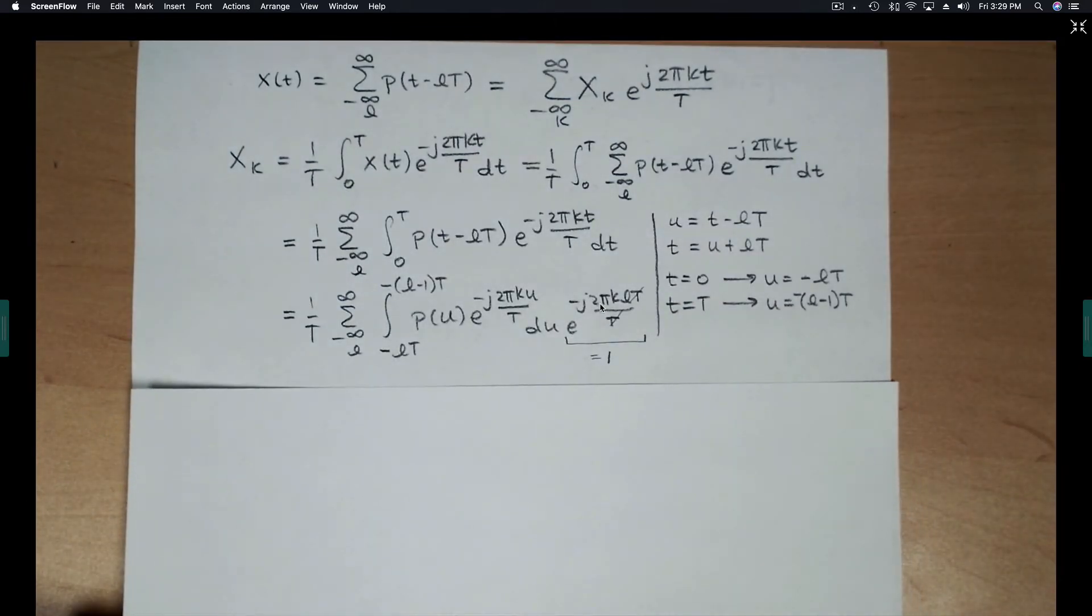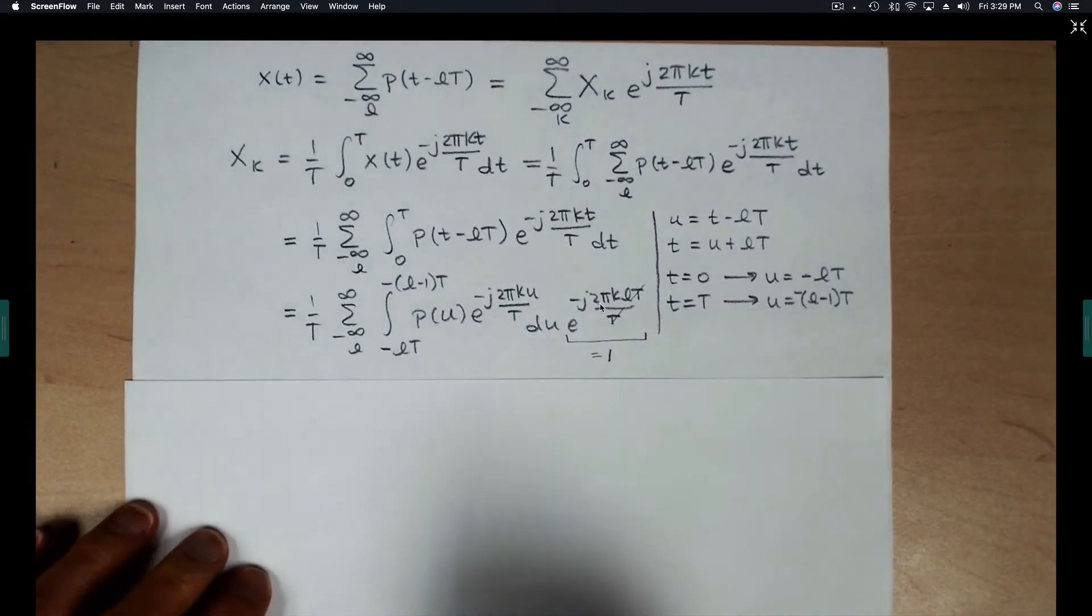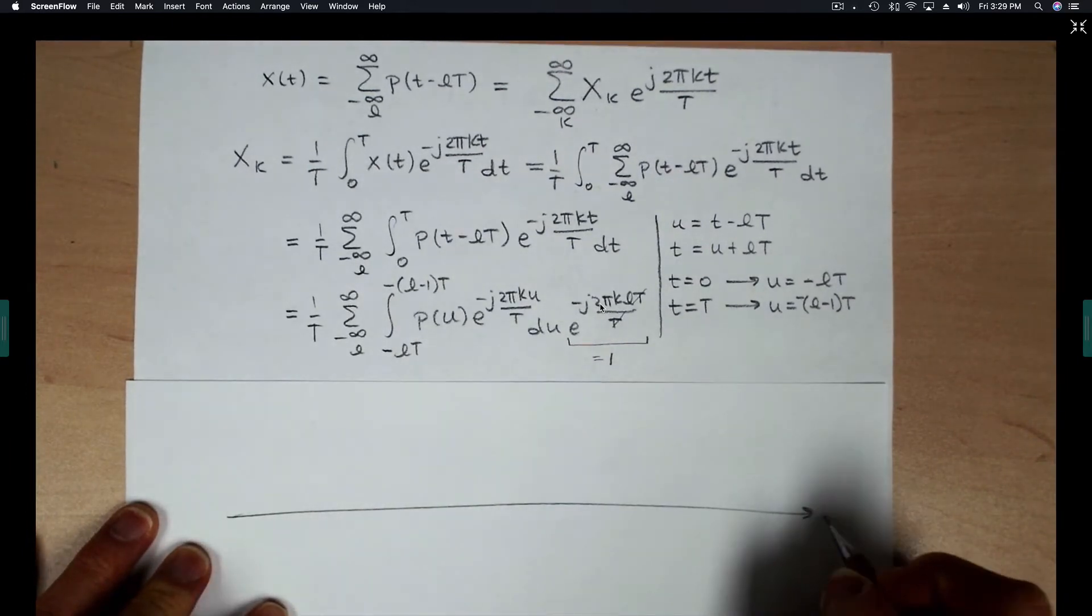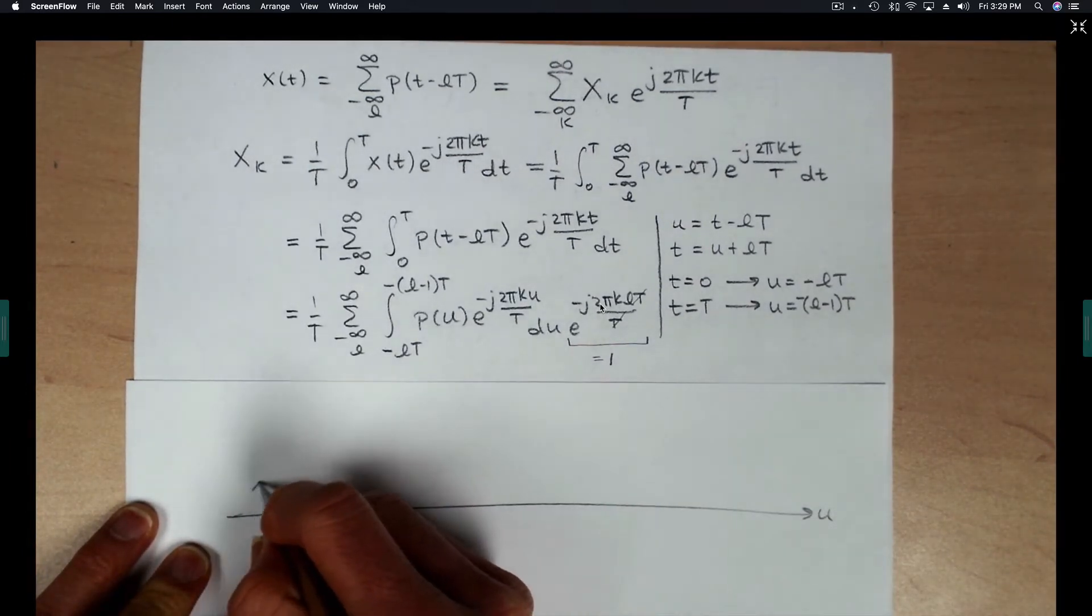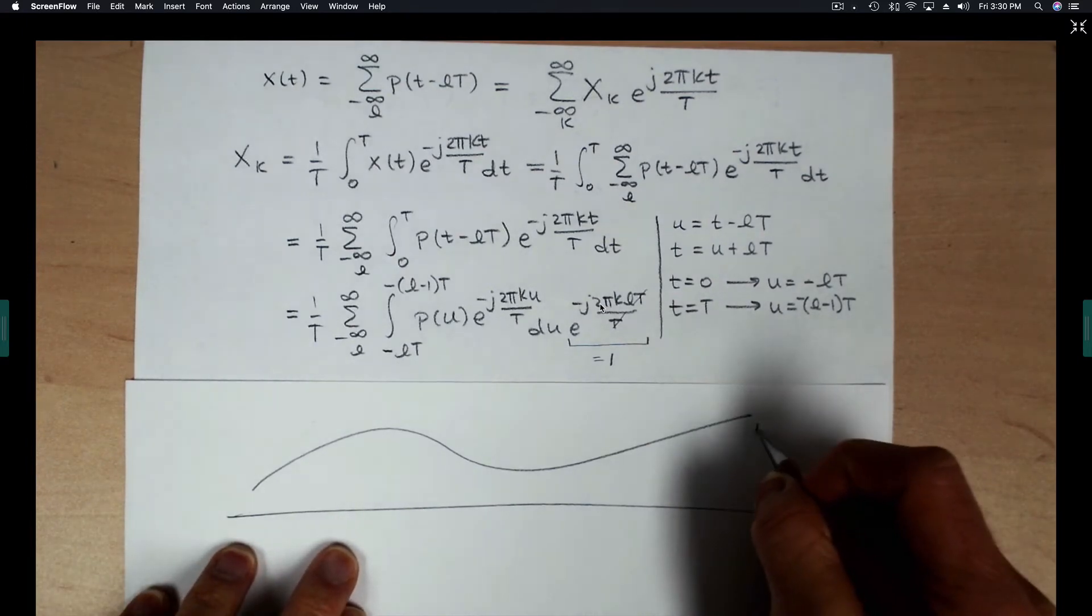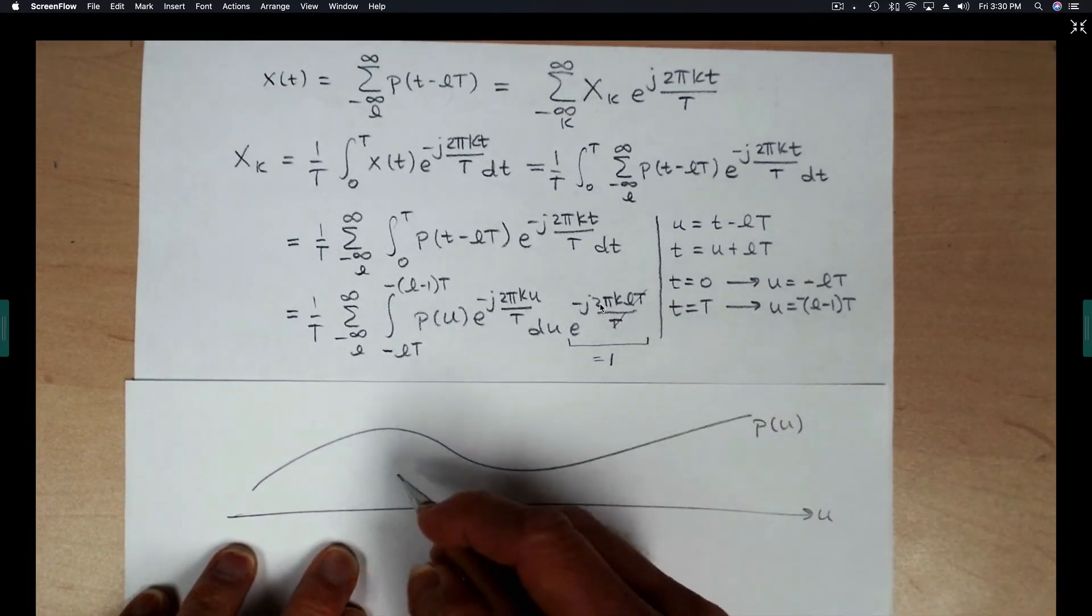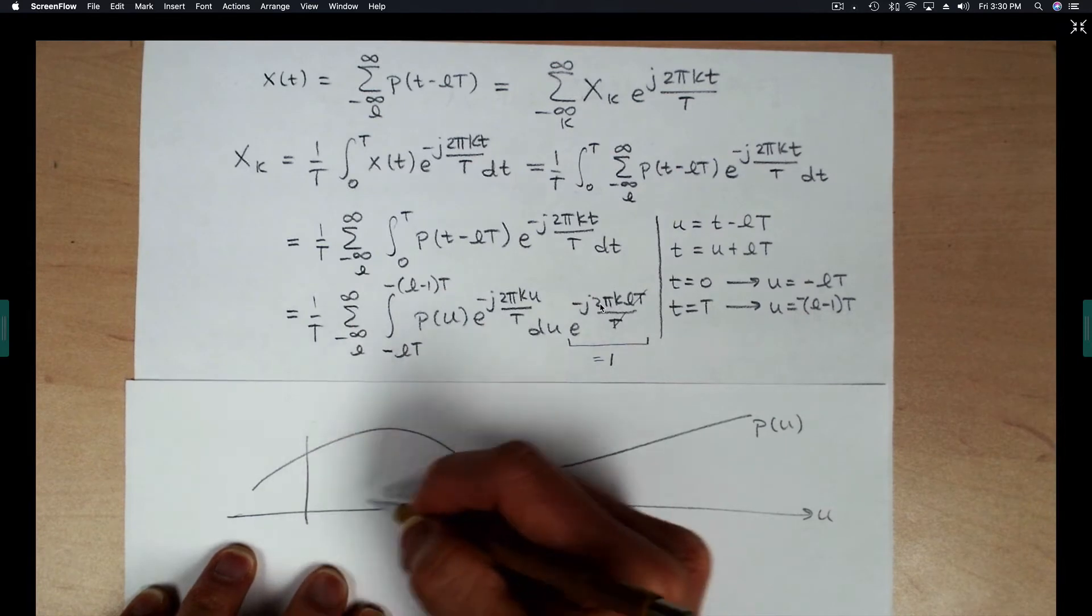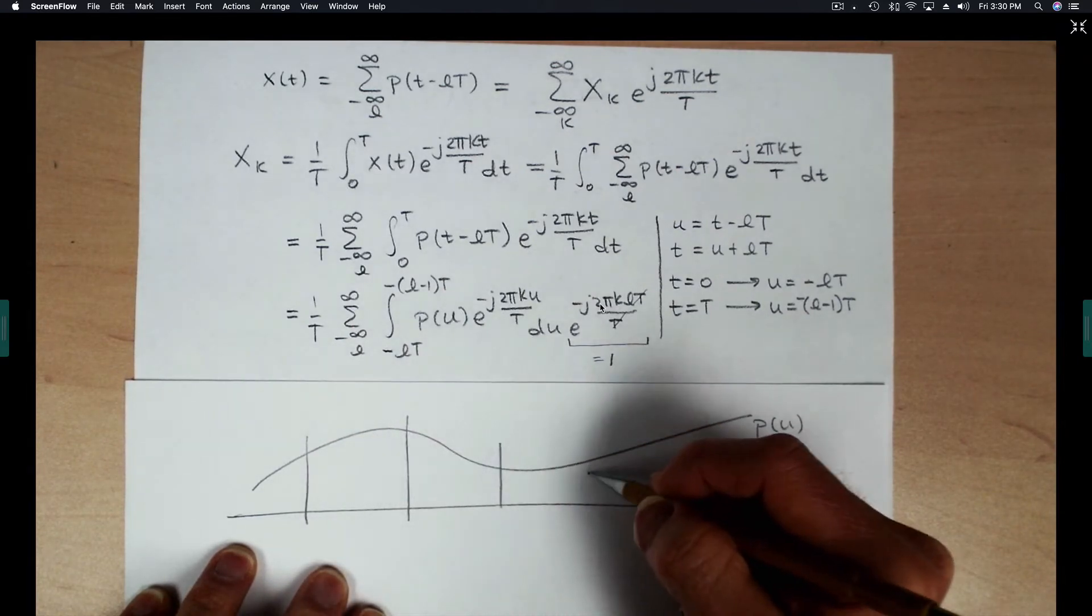To illustrate what's going on here, let's suppose that the integrand is this function that I've drawn here. So this is P of U. And then the integral is chopped up into pieces.